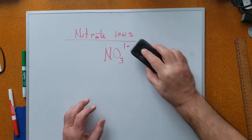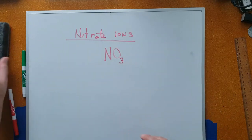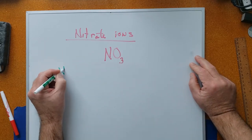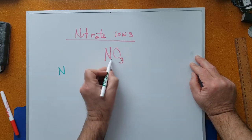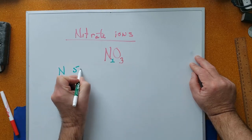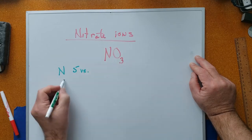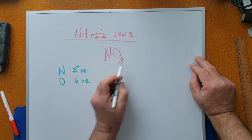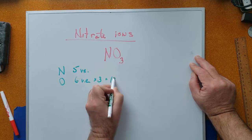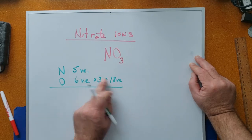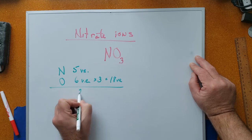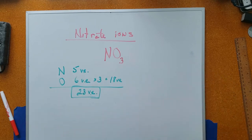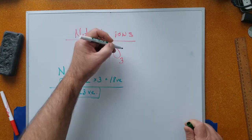For now, let's forget the negative one charge and treat this as a regular covalent compound. Nitrogen, of which there is one, contains five valence electrons. Each oxygen contains six valence electrons — it's in group six of the periodic table — and there are three of them, giving 18 valence electrons from oxygen. Adding the five from nitrogen gives us a total of 23 valence electrons.